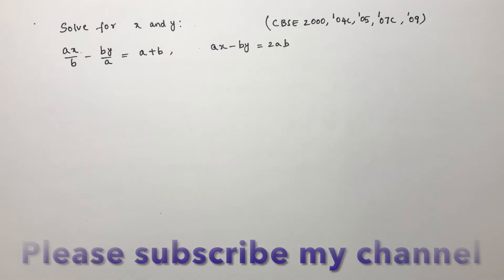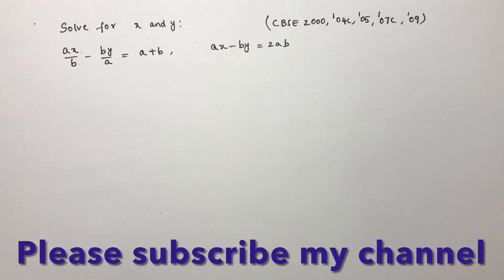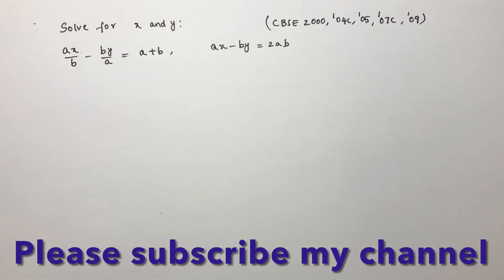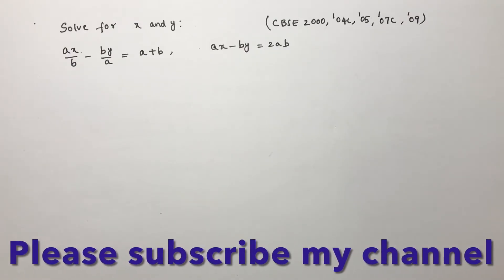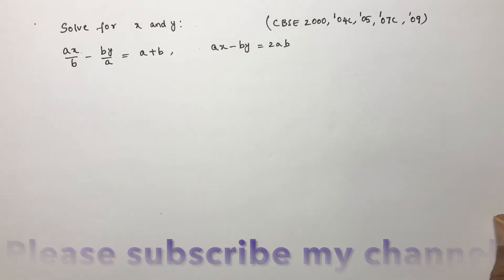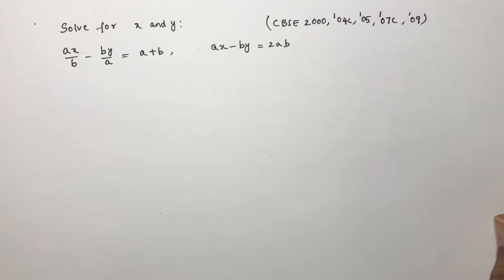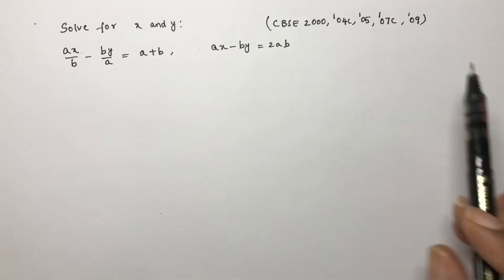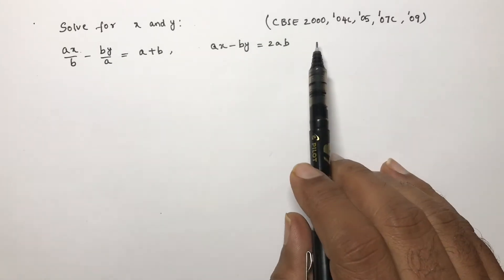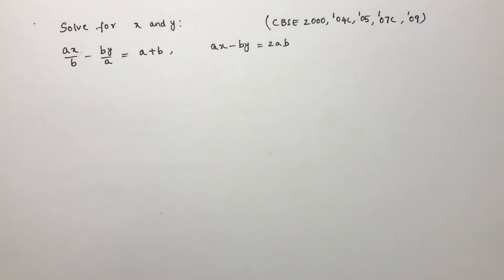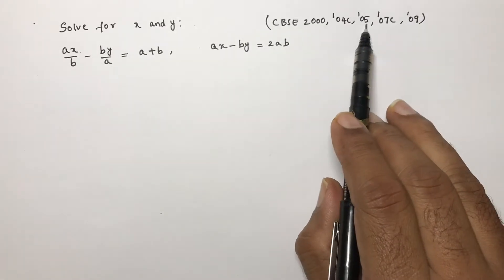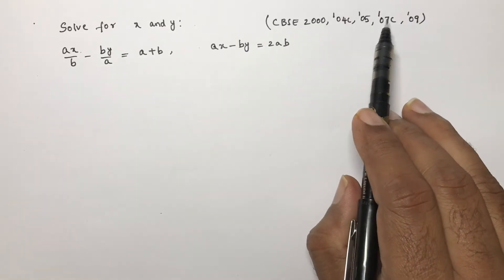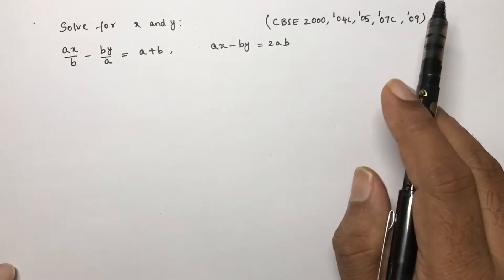Solve for x and y: ax/b minus by/a equals a plus b, and ax minus by equals 2ab. This is one of the important questions in CBC exams, asked many times in 2000, 2004, 2005, 2007, and 2009.